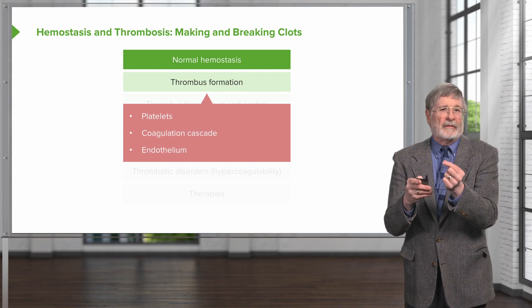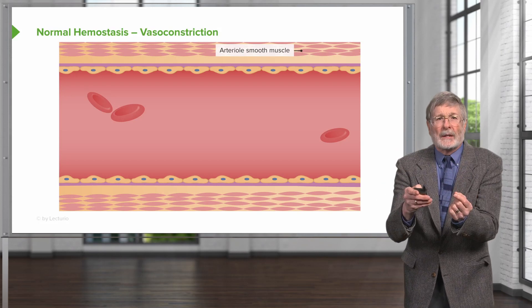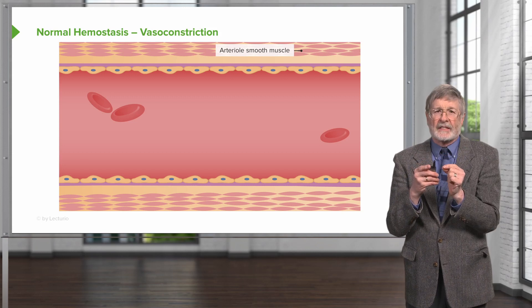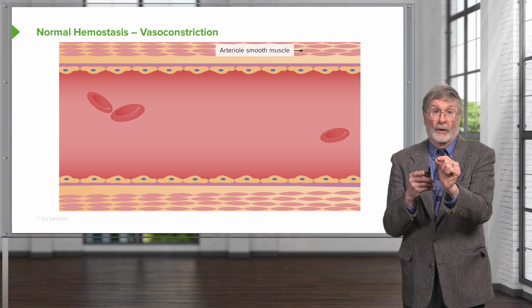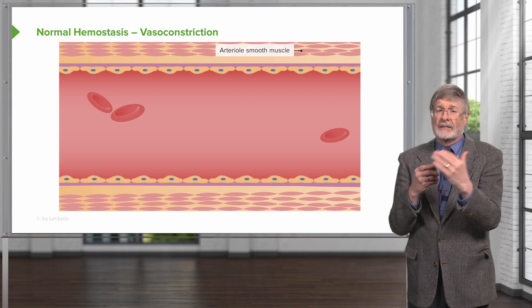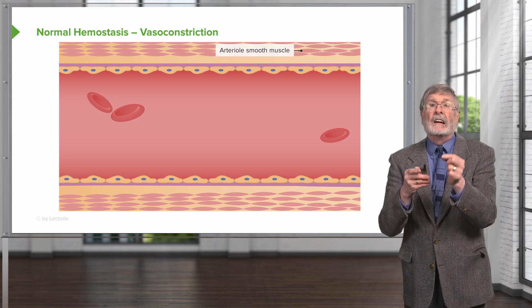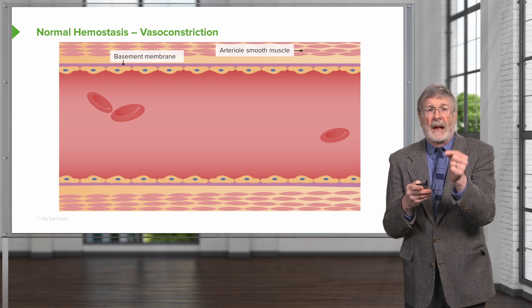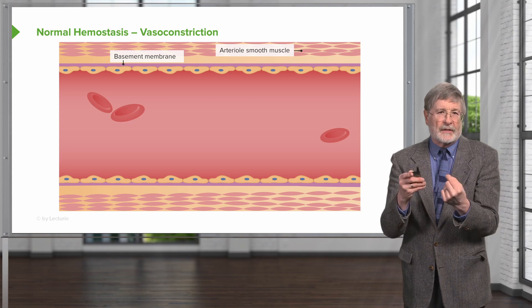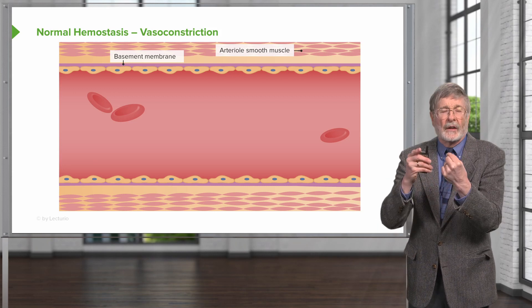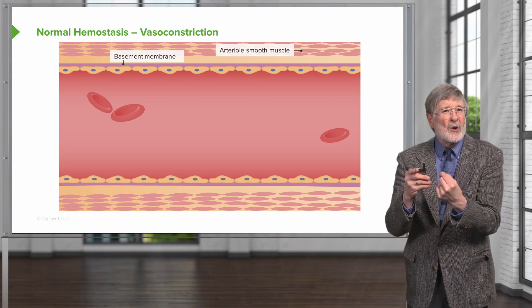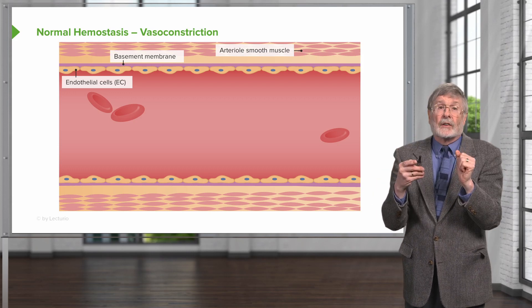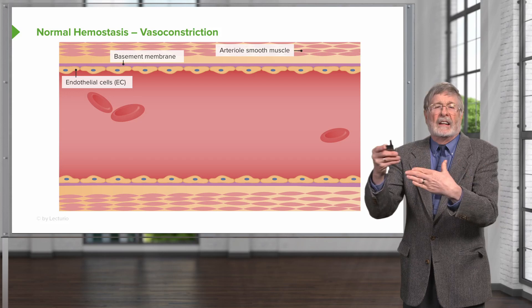This particular session is going to focus on platelets. The very first step in normal hemostasis is vasoconstriction, as you can see at the top. We're looking at a vessel with blood flowing from left to right across the screen. There's arterial smooth muscle all the way around this artery, and there's a basement membrane. Normally, the basement membrane is not exposed because endothelial cells sit on top as a single layer, keeping the blood in a liquid state.